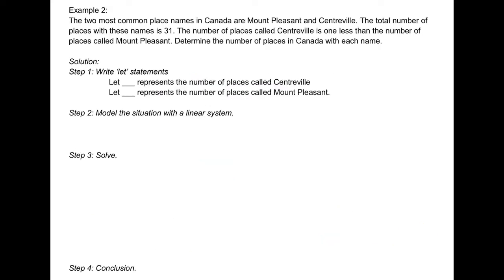Example 2: the two most common place names in Canada are Mount Pleasant and Centerville. The total number of places with these names is 31. The number of places called Centerville is one less than the number of places called Mount Pleasant. Determine the number of places in Canada with each name.